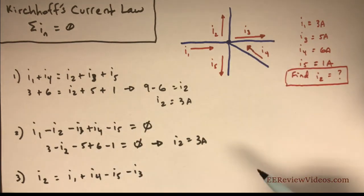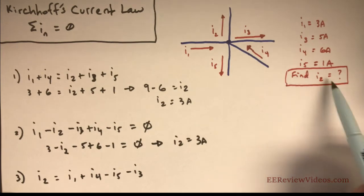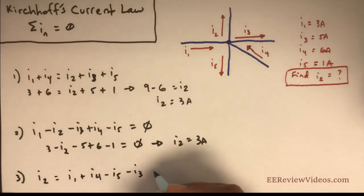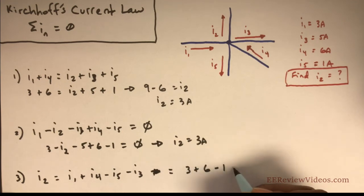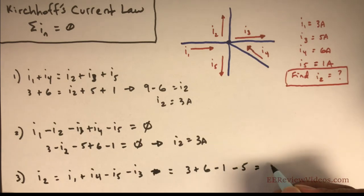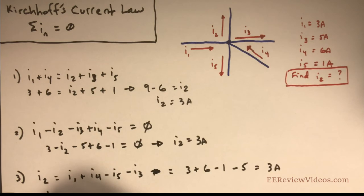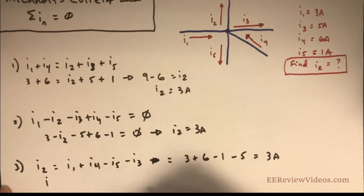This is intuitive. If you can get comfortable writing equations like this, where you're already setting up to solve for the unknown, you can easily do the math. I1 plus I4 minus I5 minus I3 equals 3 amps plus 6 amps minus 1 amp minus 5 amps. That's going to give us our 3 amps, so I2 equals 3 amps.